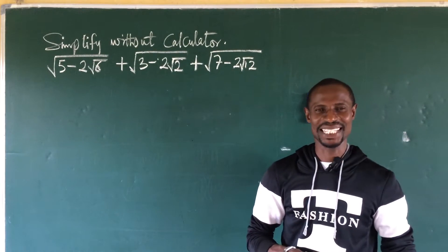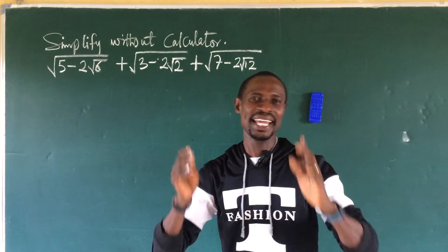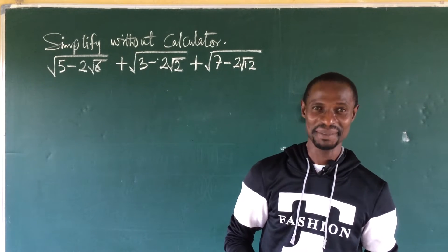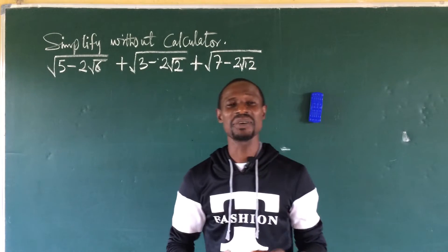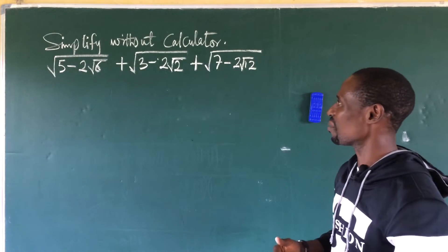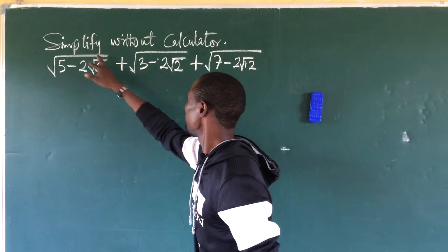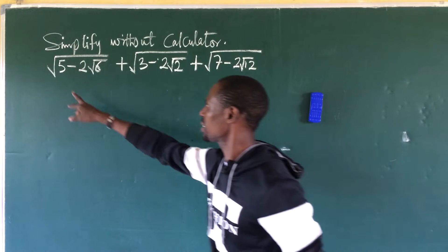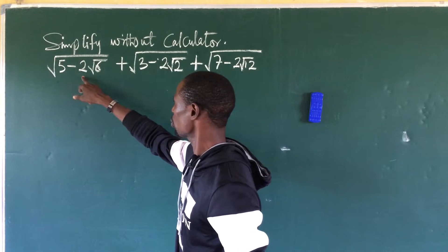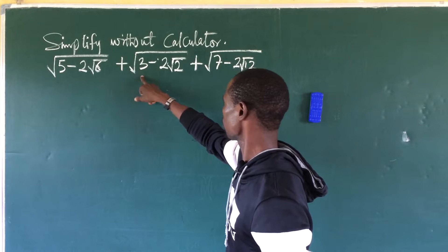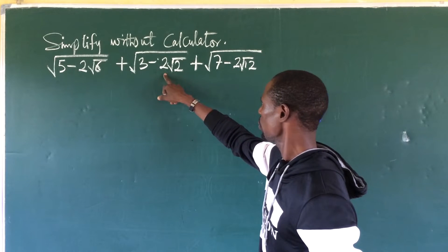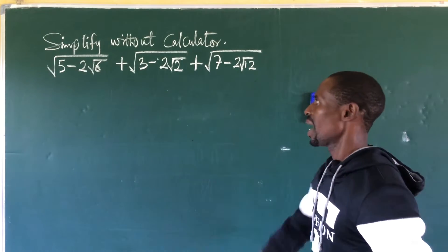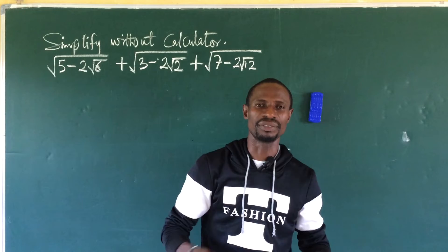Welcome to Online Maths TV. My name is Jake's Animal. This is Online Maths TV where we learn mathematics all the time. We have a challenge on the board: simplify without a calculator the expression — the square root of (5 minus 2√6), plus the square root of (3 minus 2√2), plus the square root of (7 minus 2√12).